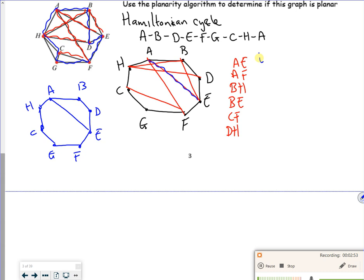And I look at what crosses A to E. So if you look, B to H and D to H cross A to E, but they don't cross each other, so that's okay.